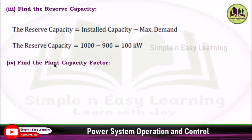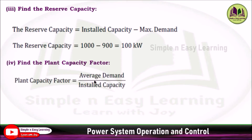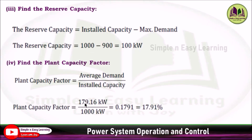Find the plant capacity factor. Plant capacity factor equals average demand divided by installed capacity. Average demand is 179.16 kilowatt divided by installed capacity of 1000 kilowatt, giving a plant capacity factor of 17.91%.